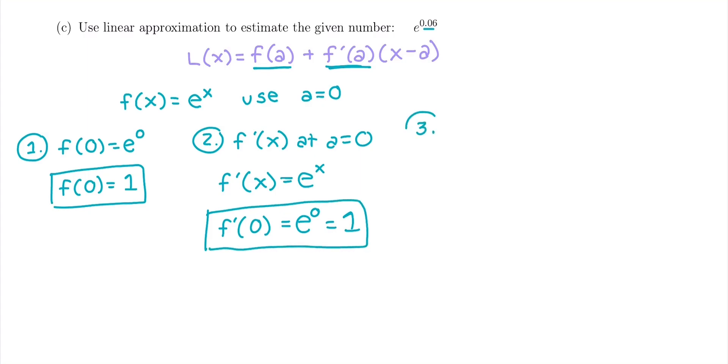So our third step is to write the overall equation. That linear approximation is going to be f of a, which was 1, plus f prime of a, that was also 1, times x minus a. Our a value here was 0. This is one where we had to figure out what a was for ourselves, but not too bad. Just think of a number you can plug in in your head, and you can leave it just like that.